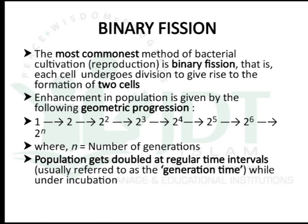Coming to binary fission — the most common method of bacterial cultivation. One cell will give rise to two cells. The enhancement in population follows a geometric progression: one cell gives two, two gives four, four gives eight, and so on, in a ratio of 2 raised to n, where n is the number of generations.